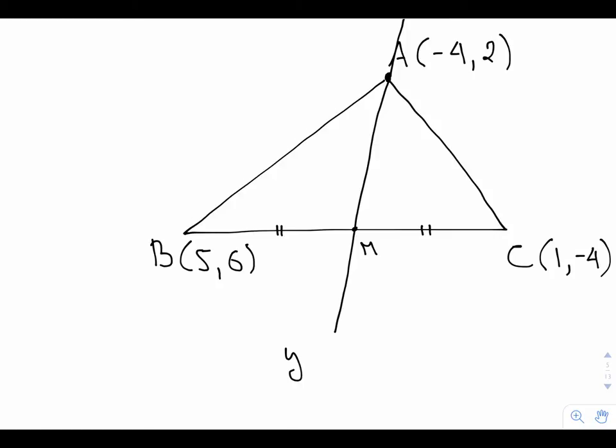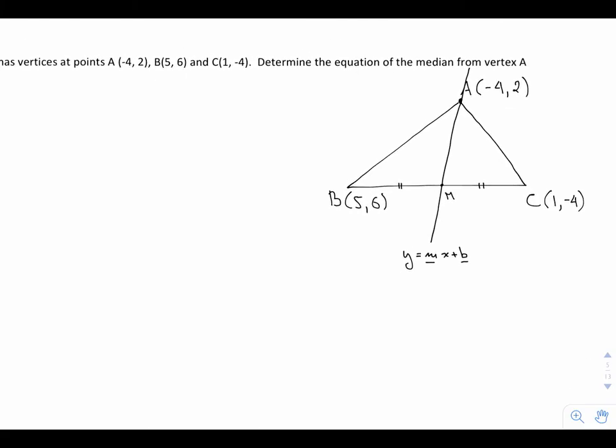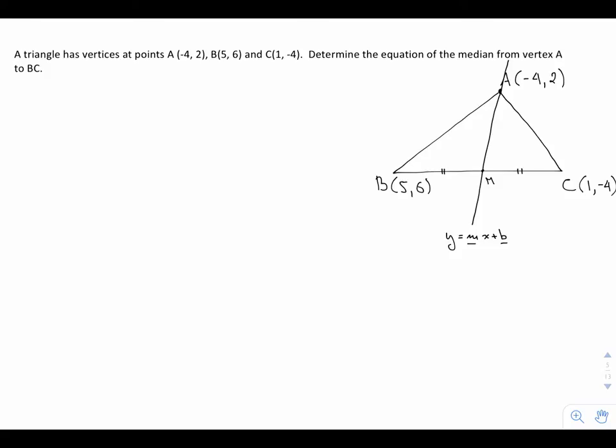We'll put it in the form Y equals MX plus B. And we're going to go about finding what the value of M is and what the value of B is. Now, M is our slope. And to have a slope of a line, we need at least two points on that line. Right now, I only have one.